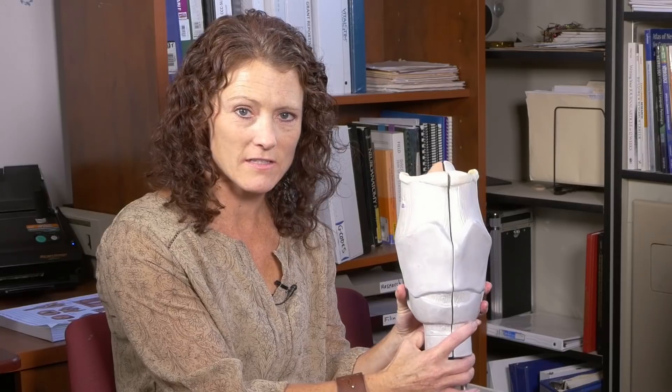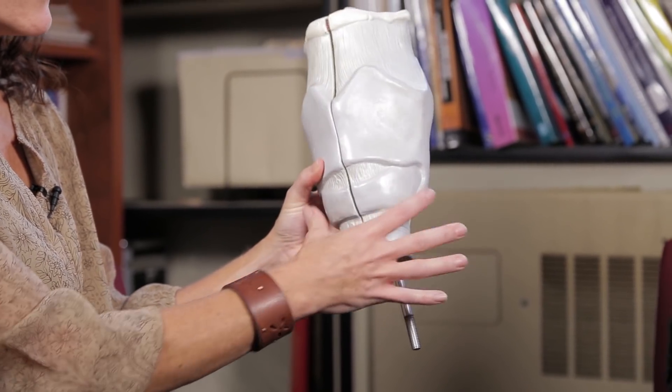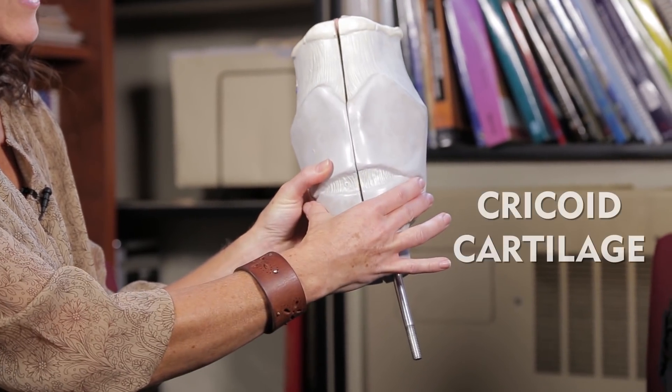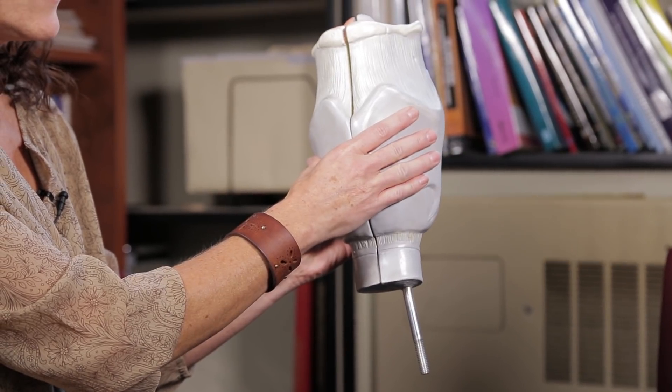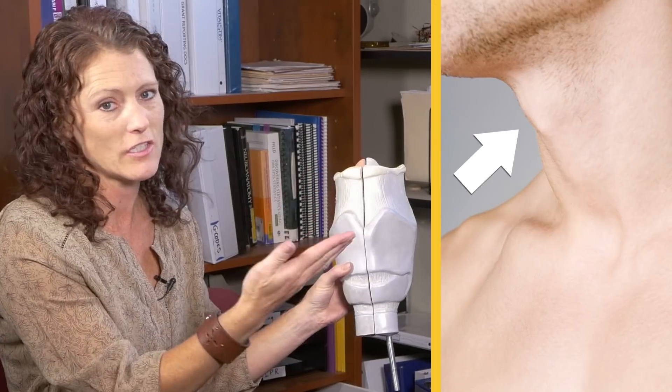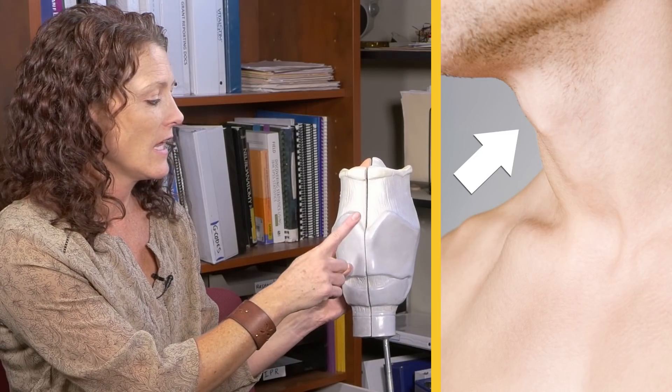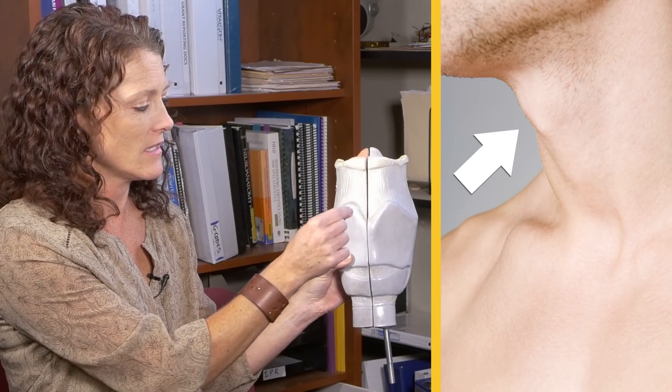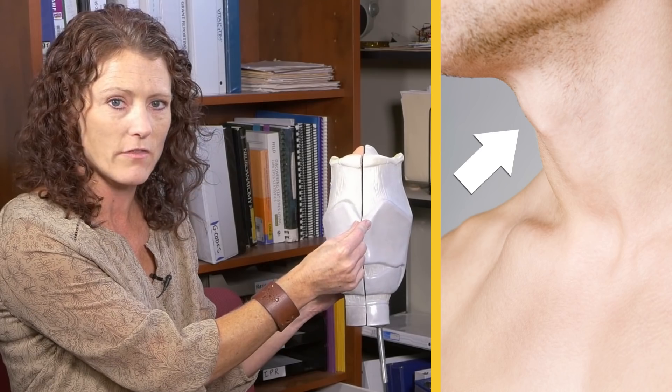So this is a model of the larynx. It's made of several cartilages. We have this cartilage at the bottom called the cricoid cartilage, and then in the middle here is the thyroid cartilage. Right about there on me. You can see the thyroid cartilage very easily in men because they tend to have a prominence there — it's called the Adam's apple. When you see a man and you see their Adam's apple, that is the very front point of their thyroid cartilage.